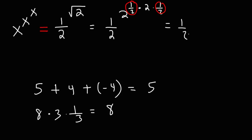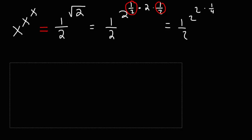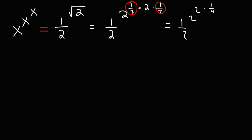We can multiply one-half by one-half to get one-fourth. So we're going to have 2 times one-fourth as exponents to that 2. Then we adjust: 2 to the second power is 4. So we have one-half raised to the fourth power, and then that is raised to the one-fourth — not 4 times one-fourth, but 4 raised to the one-fourth.